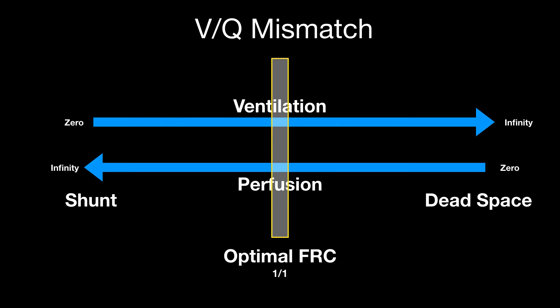Think of ventilation-perfusion on a continuum. Right in the middle, where everything is perfectly matched, you have one-to-one ventilation. This occurs at optimal FRC when you don't have lung disease.